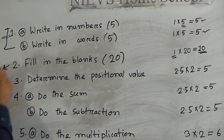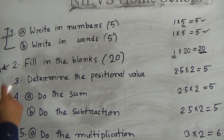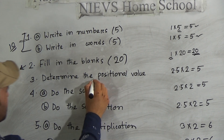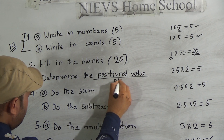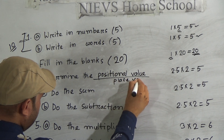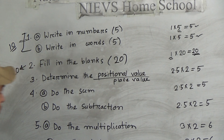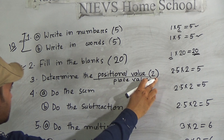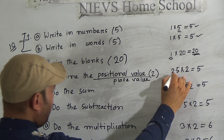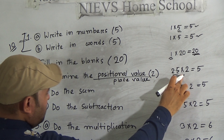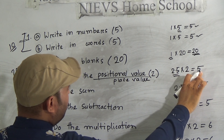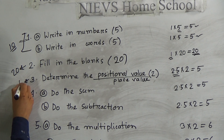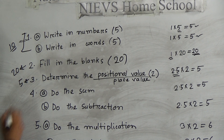Number three: determine the positional value, which is also known as place value. There are two numbers and each number contains 2.5 marks, so in two numbers it contains five marks. In question number three, there are five marks.